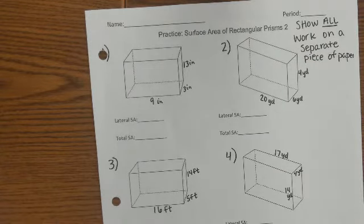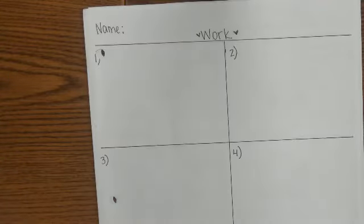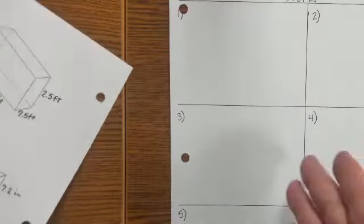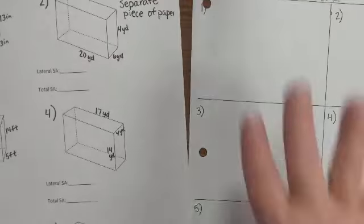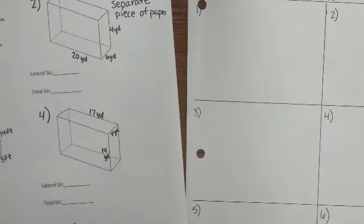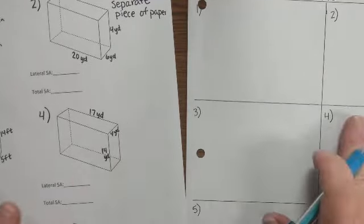You can either use notebook paper, or you can use a handy dandy sheet like this that we made for you. Okay, has two sides, has 12 problems here. You have 12 problems, 12 spaces. This will keep you nice and organized. It's really easy for me to see what you've done.